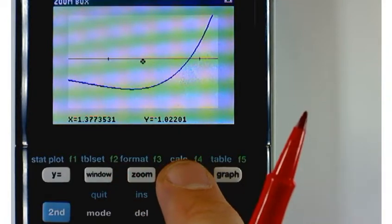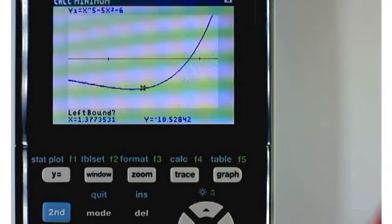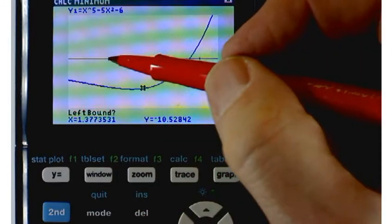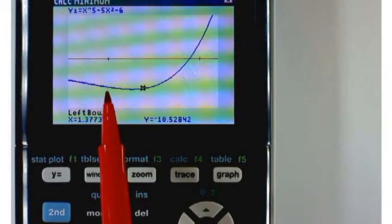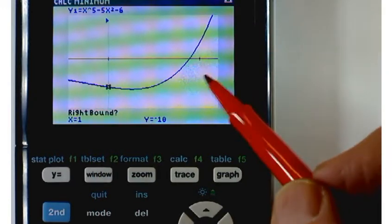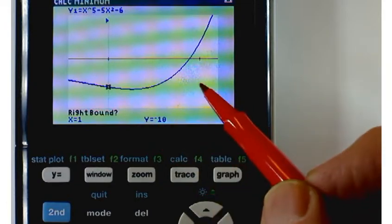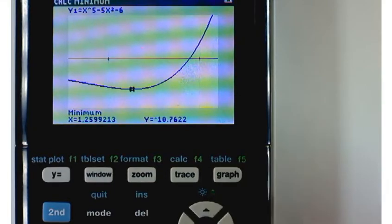But now it makes it pretty clear that my minimum is someplace around here. Let's go back to the Calculate menu. Second. Trace. Minimum is the third option. Kind of the same thing as before. I want to pick something to the left of my root. So, say, at 1. And something to the right of my minimum, which would be 2. Press enter, and it should find the minimum value here.